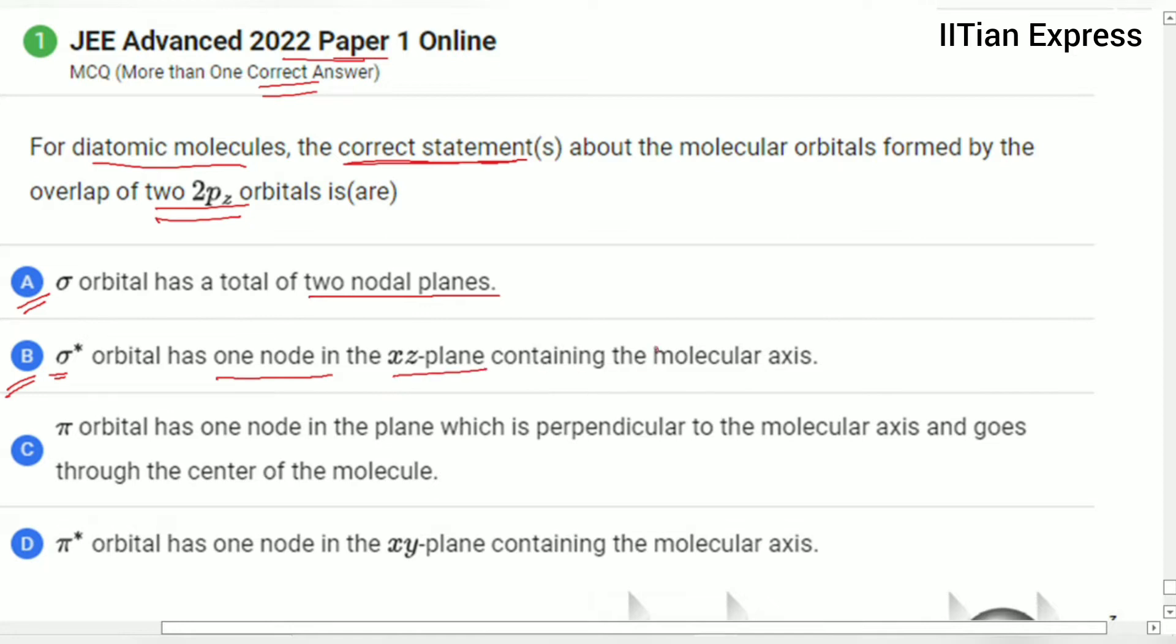Option C is saying: pi orbital has one node in the plane which is perpendicular to the molecular axis and goes through the center of the molecule.